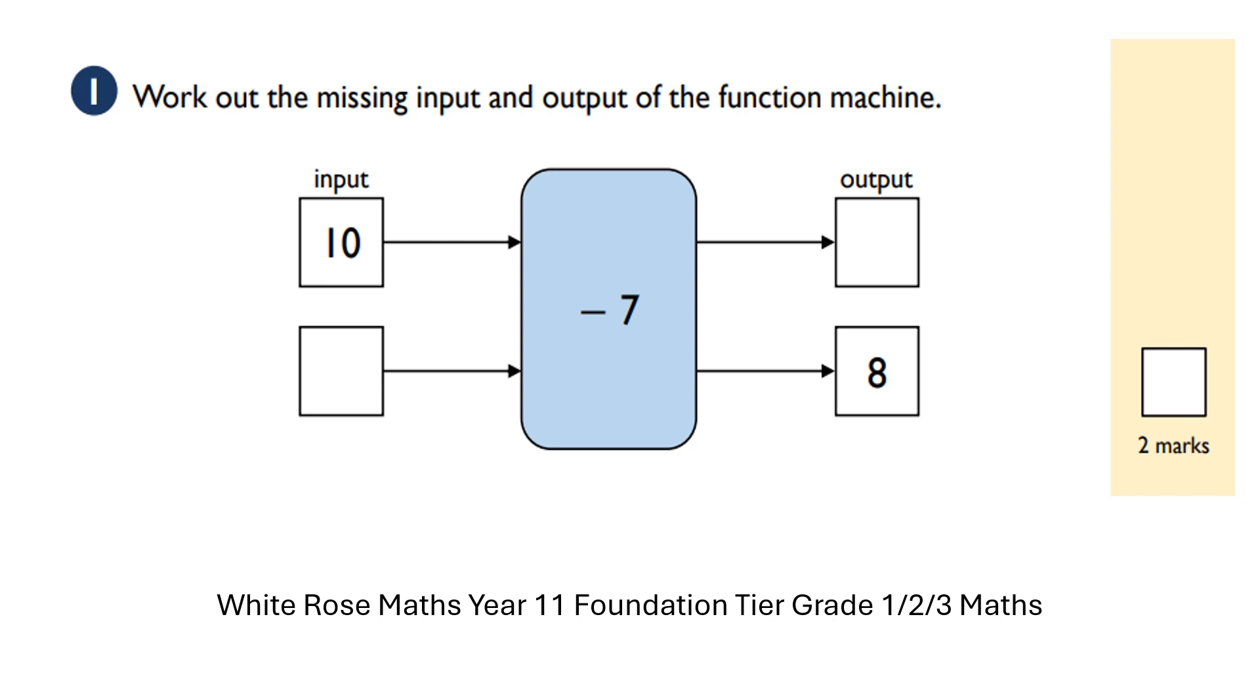GCSE 9-1 maths, a typical foundation tier exam-style question involving function machines. Question number one: work out the missing input and output of the function machine. The input is 10.